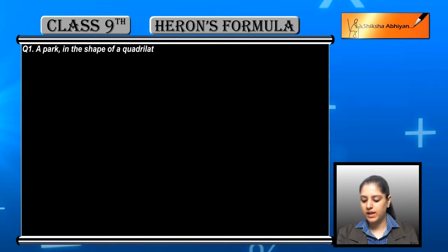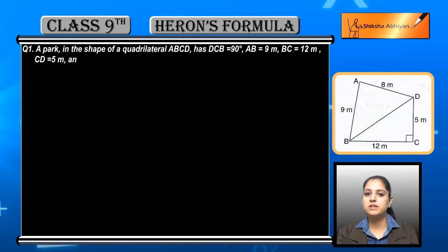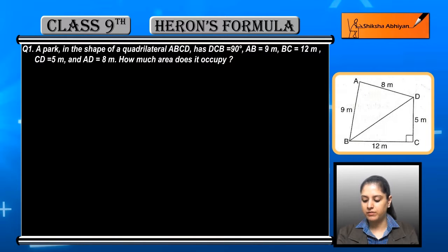Now exercise 12.2, question number 1. A park in the shape of a quadrilateral ABCD has angle DCB equal to 90 degrees, AB = 9 meters, BC = 12 meters, CD = 5 meters, and AD = 8 meters. How much area does it occupy?